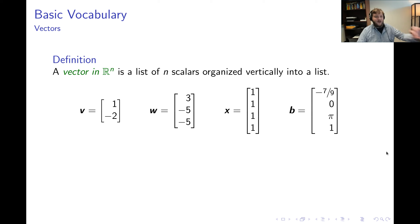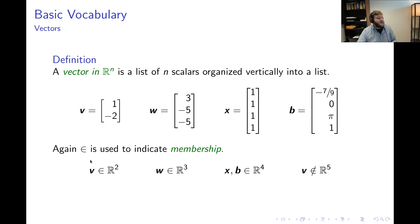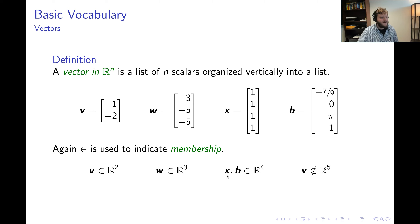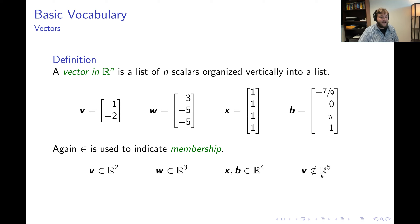When we say ℝⁿ, N refers to the number of scalars in the list, and we use membership notation accordingly. V has two scalars, so V ∈ ℝ². W has three scalars, so W ∈ ℝ³. X and bold B each organize four scalars, so X, B ∈ ℝ⁴. Note that bold V organizes two scalars, not five, so it is not a vector in ℝ⁵.